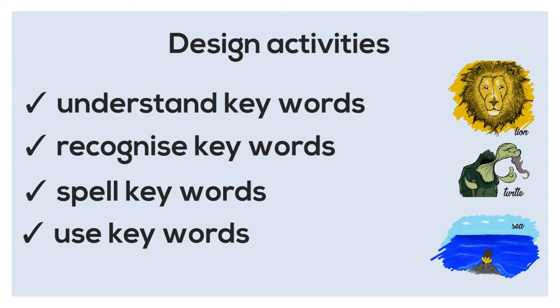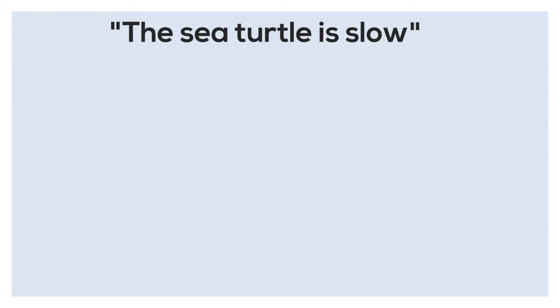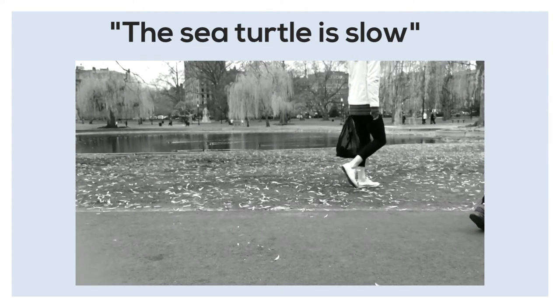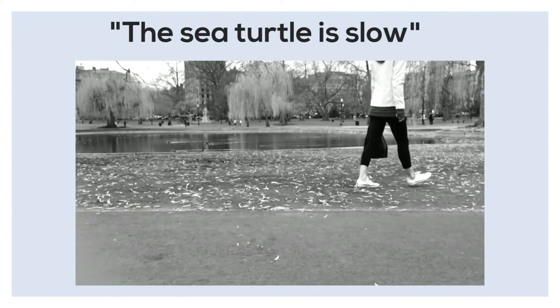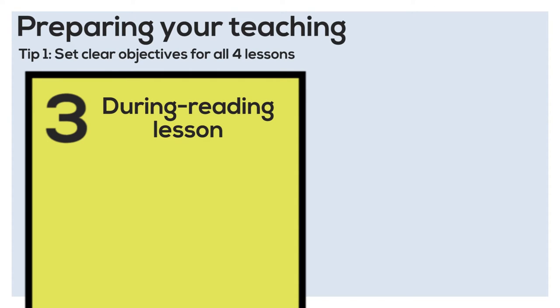You do not need to teach every single word. For example, think about the sentence, the sea turtle is slow. The students may not know the word slow, but you can easily explain this word by acting it out dramatically when you read the story. After making sure your audience understands the key words in your story, you can move on to the actual story. This lesson is known as the during reading lesson.